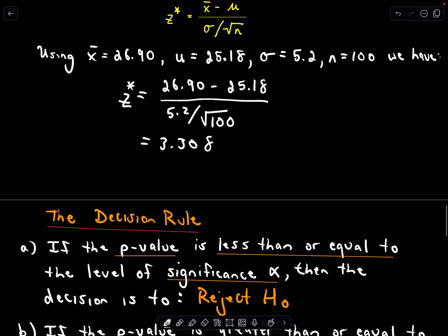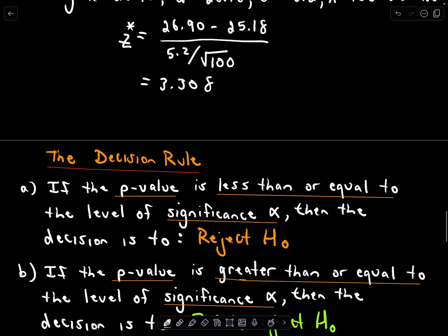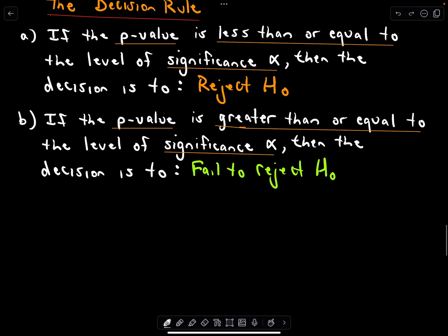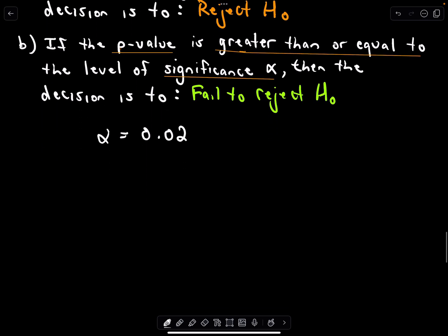What do we do with that? We just use our decision rule. The idea is if our p-value is less than or equal to the level of significance, we reject the null hypothesis. If not, we don't reject it. Alpha was equal to 0.02. That was the level of significance that we picked. All we have to do is look at this p-value.